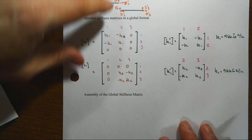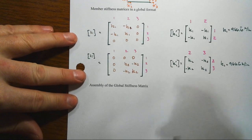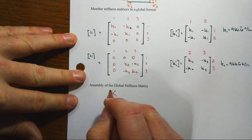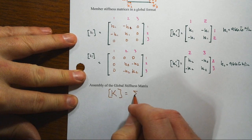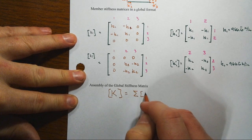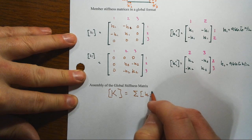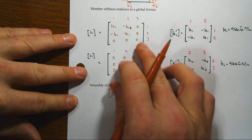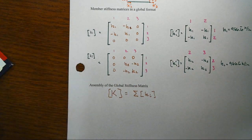All right, now then when we want to, when we've got them in this global format, that means that our big K then is just a direct assemblage of all the little ones. But only when you've got it into this global format can you do this simple summation.